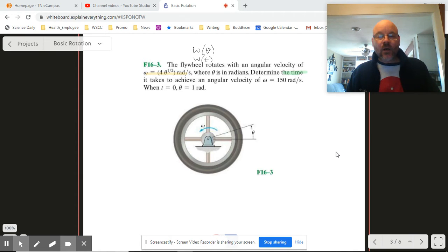If we can get omega as a function of time, then all we have to do is set omega equal to 150 and then we're good to go. But how do we make this switcheroo here?